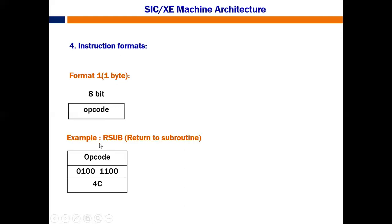Let's take one example: RSUB, which means return to the subroutine. This is one example of the 1-byte format. The opcode of RSUB is 4C, which is represented in binary as 0100 1100. So this is format 1.